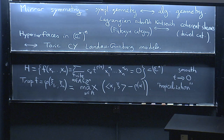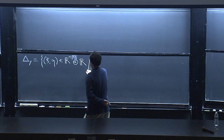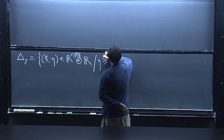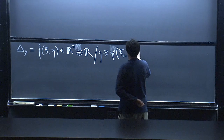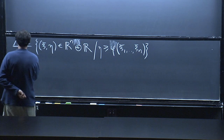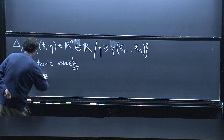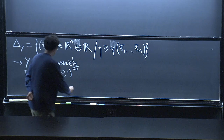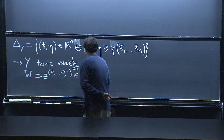Now we define a polytope — everything that lives over the graph of this tropicalization. It's a polytope in R^{n+1} defined by the last coordinate eta being greater or equal to the value of phi. This is a convex unbounded polytope, and it defines a toric variety, noncompact. There's a distinguished toric monomial, which is the monomial with exponent (0,0,...,0,1) on y.